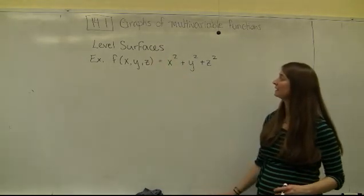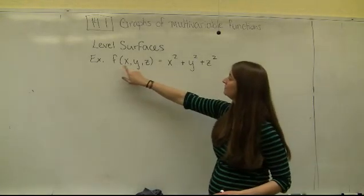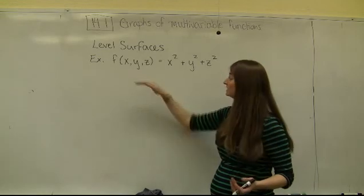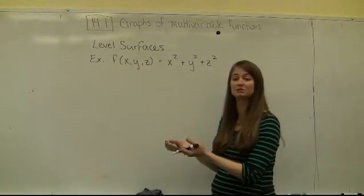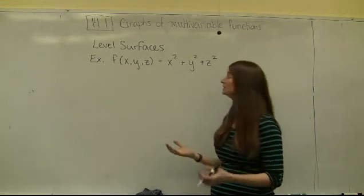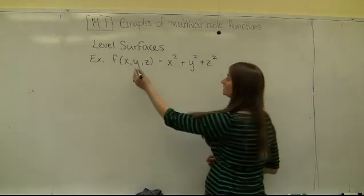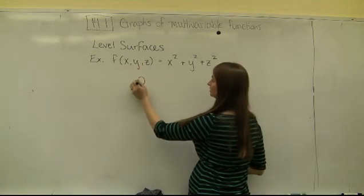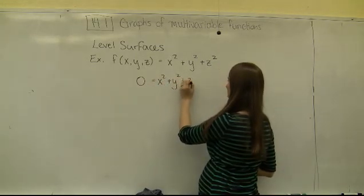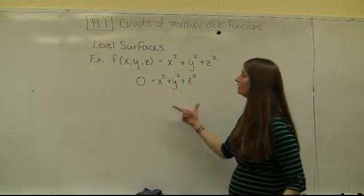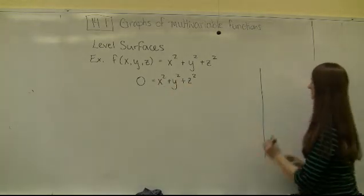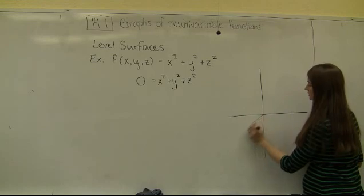Level surfaces are formed by setting f(x, y, z) equal to some constant value, which traces out a surface. For all different output values, different surfaces are traced out. When I set f(x, y, z) = 0, I get 0 = x² + y² + z², which is a really boring level surface — it's a sphere of radius 0 centered at the origin, which is just the single point (0, 0, 0).